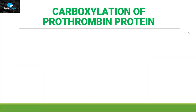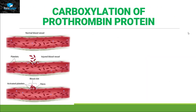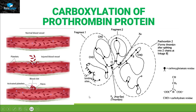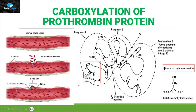Carboxylation of prothrombin protein: prothrombin is present in our blood vessels and helps in blood clotting. Looking closely at the structure of prothrombin, we can see a lot of carboxyglutamate residues present at the end terminal of this protein. These help the attachment of calcium ions, which is a necessary process to initiate blood clotting.